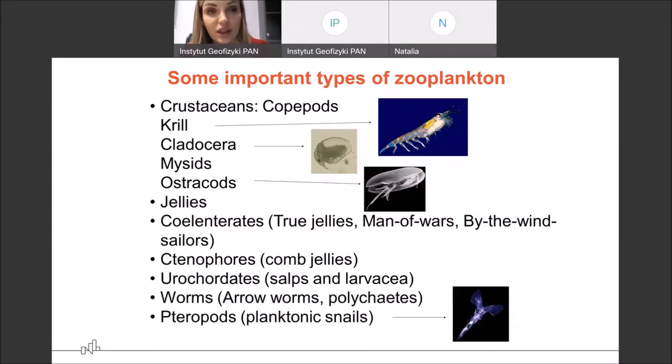So some important groups of organisms that belong to zooplankton: crustaceans, copepods, krill, which we should mostly associate with the southern regions with the Antarctica, jellies, worms or pteropods. So zooplankton includes representatives of many, many groups of marine organisms.